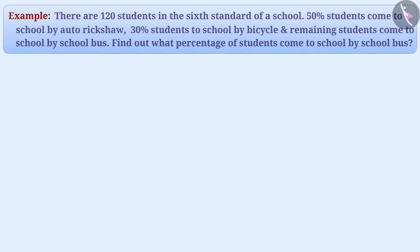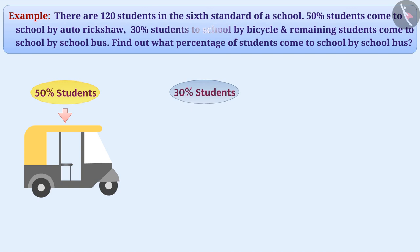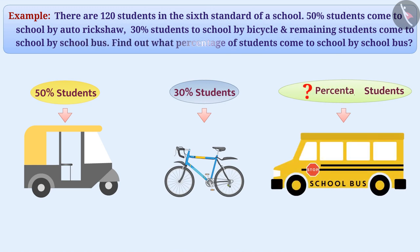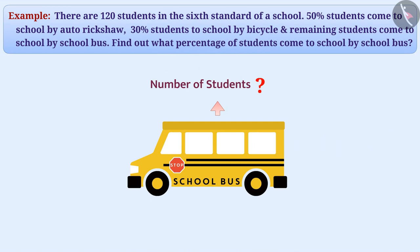Next example: There are total 120 students in the sixth standard of a school. From these, 50% students come to school by auto rickshaw, 30% students come to school by bicycle, and the remaining students come to school by school bus. Find out what percentage of students come to school by school bus.